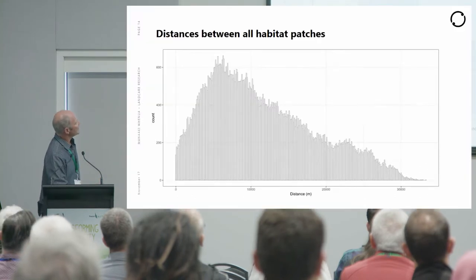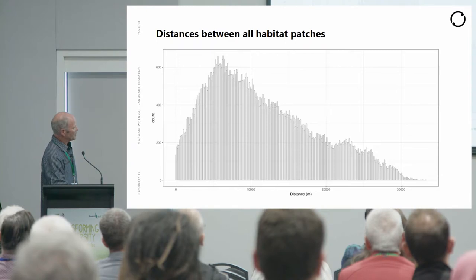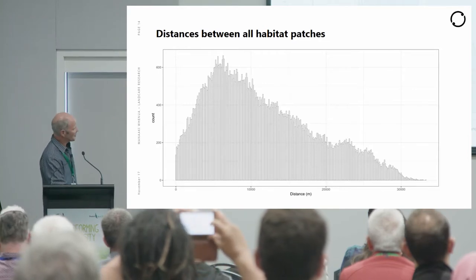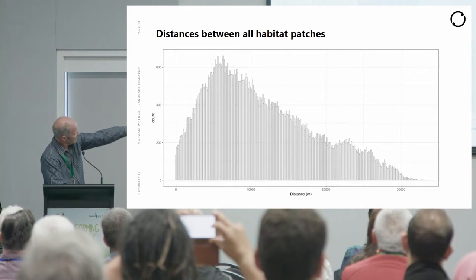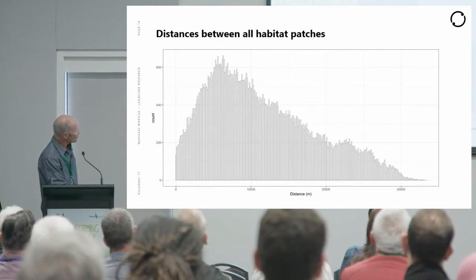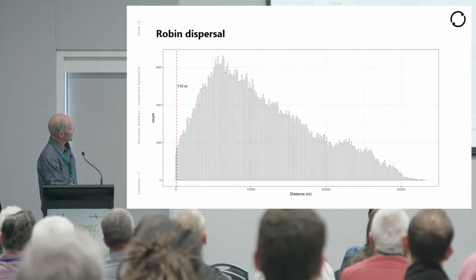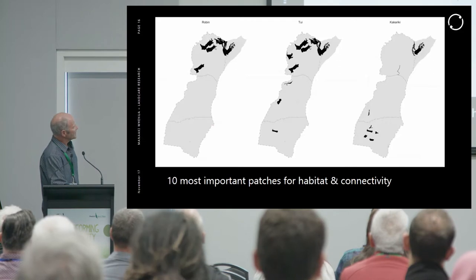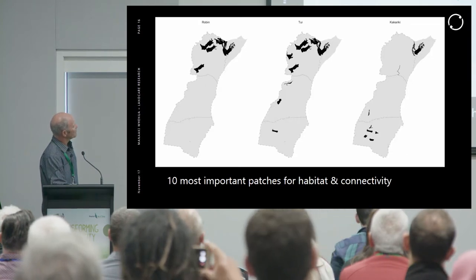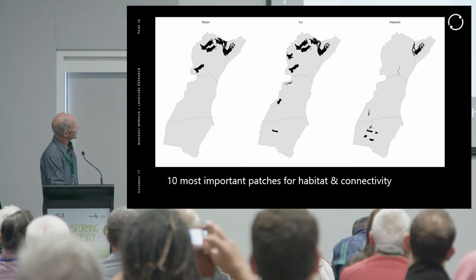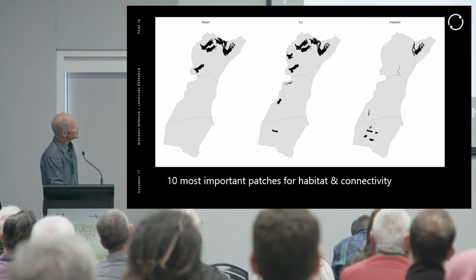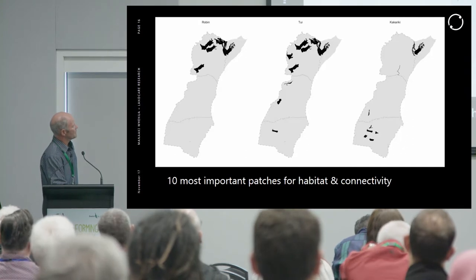Looking at distances between all habitat patches in the landscape, most are around 10 kilometres apart, with very few that are far apart. For Robin, whose maximum dispersal is around 110 metres, very few patches are accessible. The analysis then ranked the 10 most important patches for habitat and connectivity. For Robin, the most important patches are in the north because they can't move very far. For Tui, it's a different story — they can access a wider range.